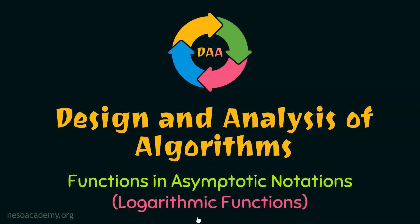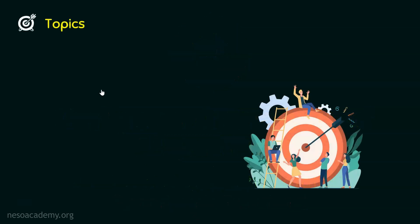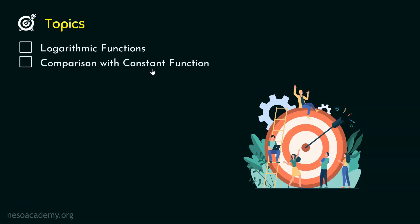In our previous presentations, we understood what decrement functions and constant functions are, and that constant functions are asymptotically bigger than decrement functions. Now in this lecture, we will discuss the third type of function in asymptotic notations: the logarithmic function. The topics of this lecture are logarithmic functions and their comparison with constant functions.